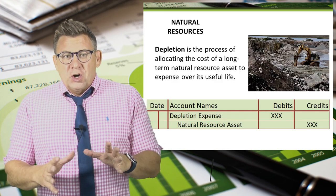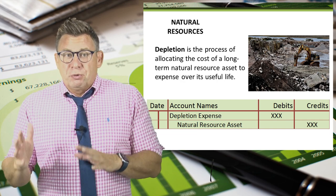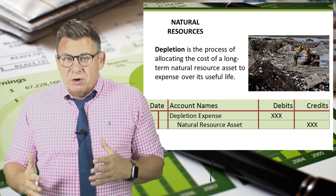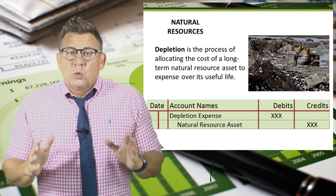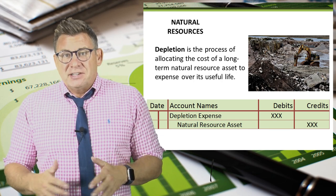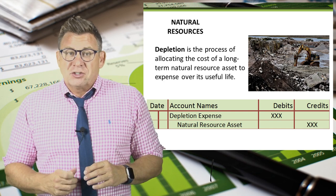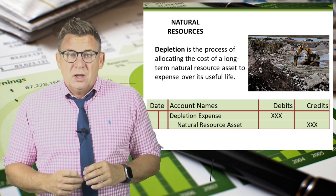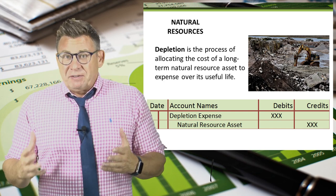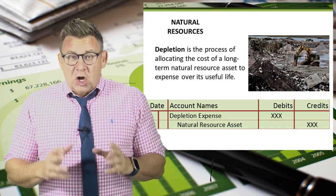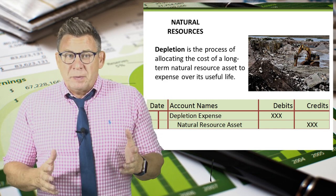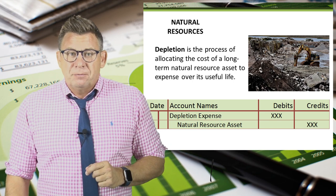You've learned that plant assets are depreciated as their values are used up over time. Natural resources are depleted as their values are used up during extraction. Thus, depletion is the process of allocating the cost of a long-term natural resource asset to expense over its useful life.